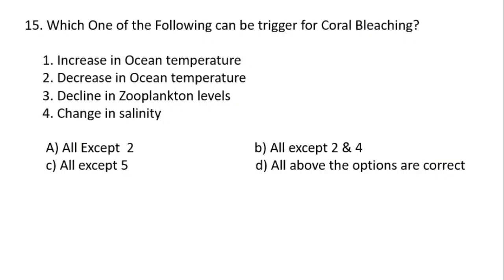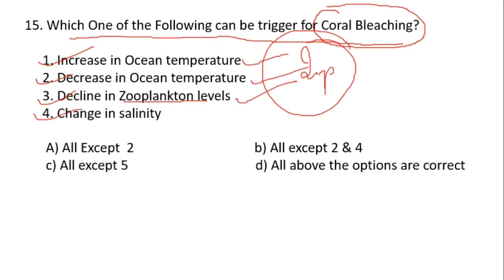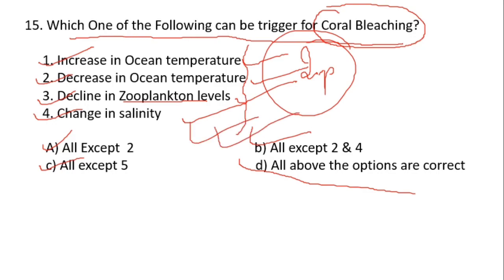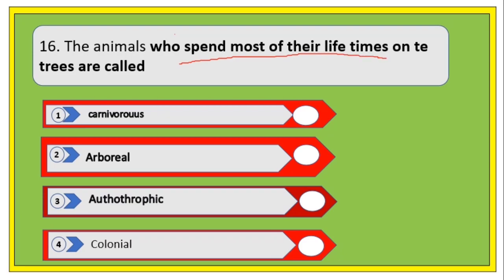Which of the following can trigger coral bleaching? Options are: increase in ocean temperatures, decrease in ocean temperatures, decline in zooplankton levels, change in salinity. All of these options are correct — the answer is 'all of the above.'